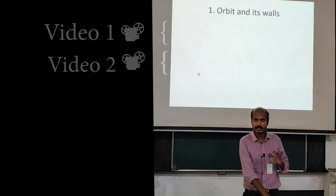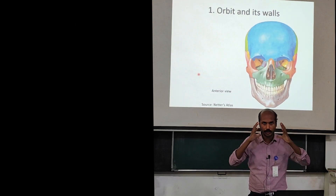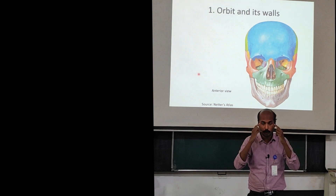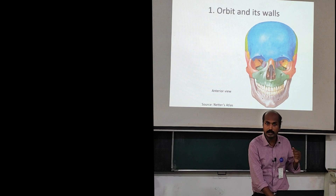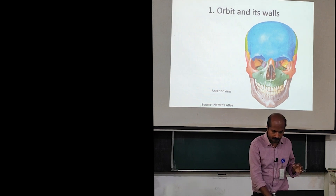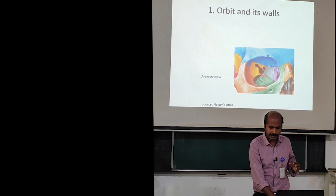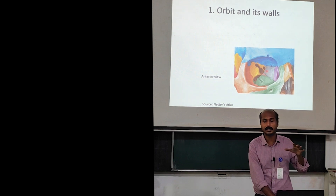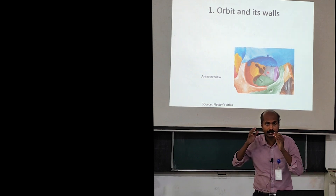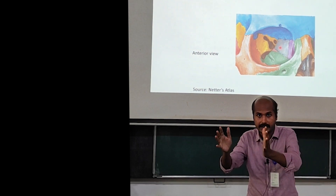First, we go to the orbit and its walls. What you see here is an illustration of the entire articulated skull with the two orbital sockets. They are basically bony hollows in which the eyeballs are located. If I zoom into the right orbit, you can see that it is actually very deep, and the shape — the geometry of this orbit — is actually pyramidal. If I just project it into the air, it will look like this.